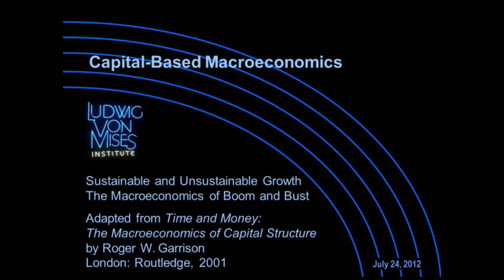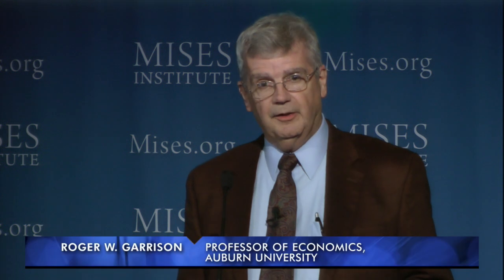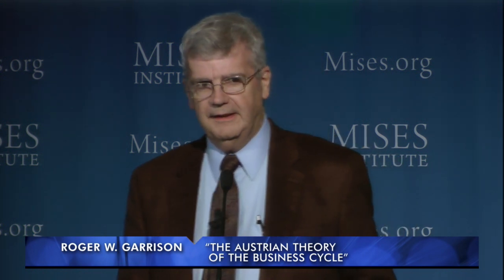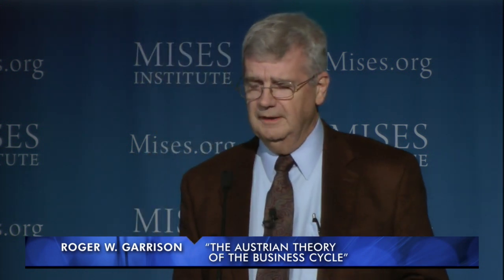If you look at my book, Time and Money, you'll see there are only a couple of chapters devoted to expositing the Austrian theory of the business cycle. Other chapters use that same apparatus to deal with deficit spending, spending on infrastructure, credit control, and even tax reform — for instance, what would happen if we reformed in the direction of a consumption tax instead of an income tax. So the apparatus is very versatile, although the main application is the business cycle.